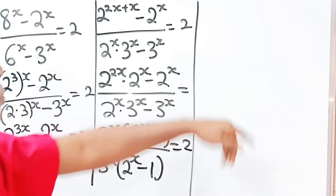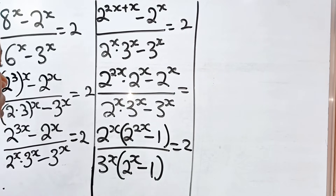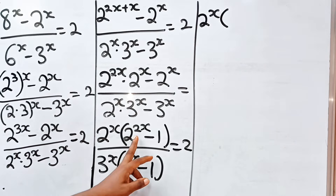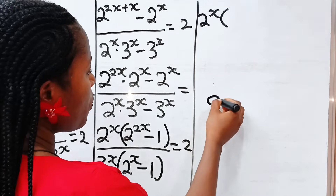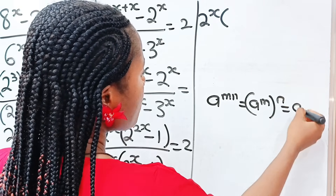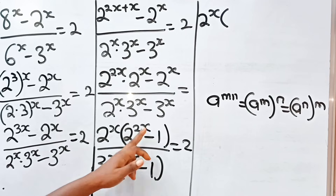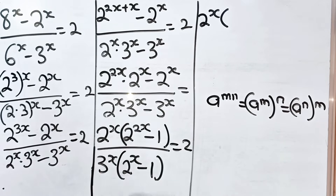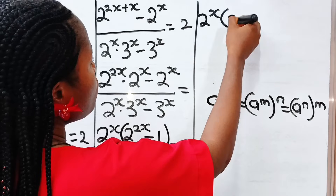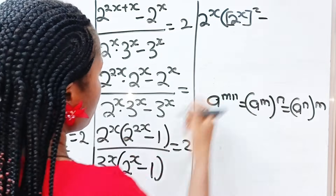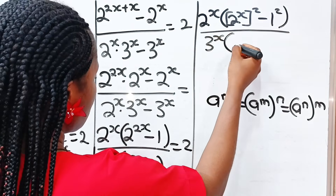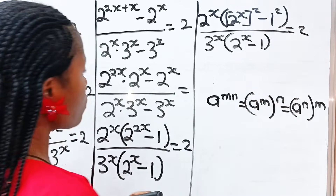Now let us solve. Looking at this, we have 2 to the power of x multiplied by... Remember that 2 to the power of 2x: using a to the power of mn equals a to the power of m raised to the power of n, we can bring 2 out so that we have 2 to the power of x, all squared, minus 1 squared, divided by 3 to the power of x multiplied by 2 to the power of x minus 1, is equal to 2.